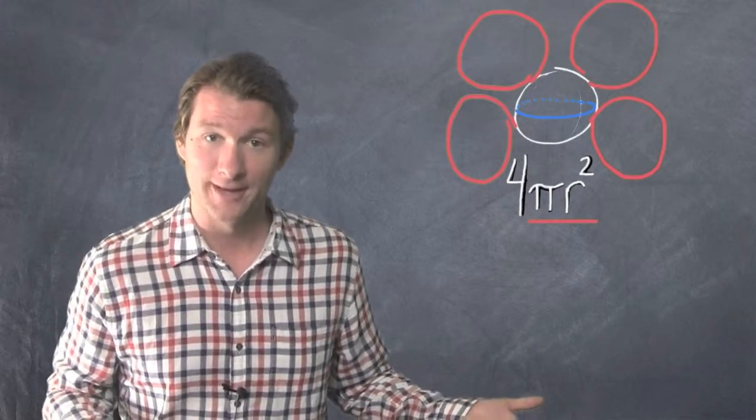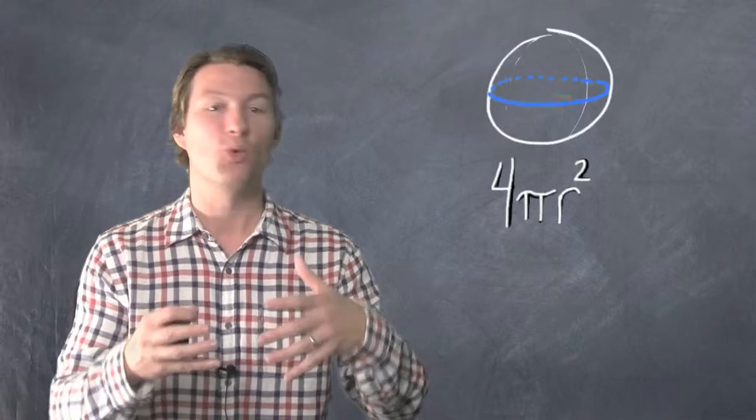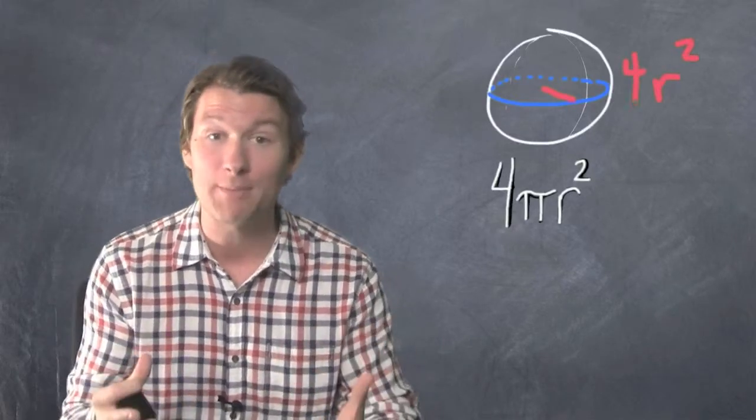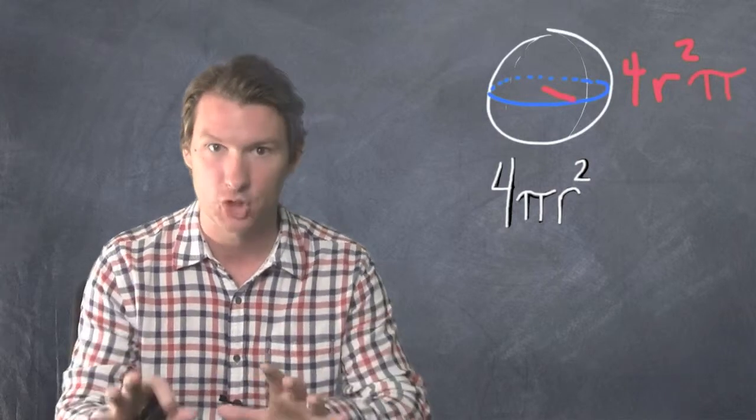Alright, you're like, alright nerd, get on with it. Let me show you how to do it. If you have the radius, all you have to do is square the radius, multiply it by 4, and throw a π on there. Let me show you what I mean.